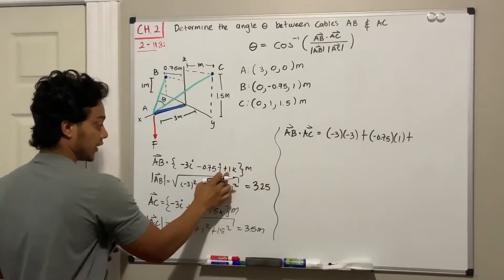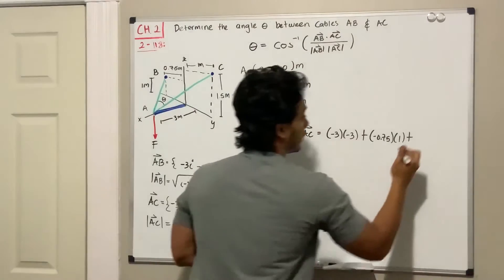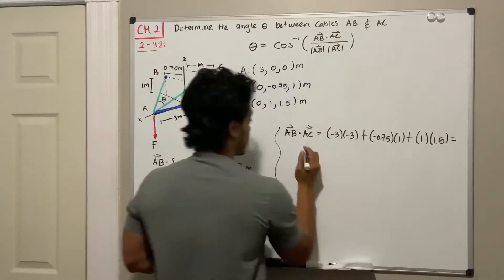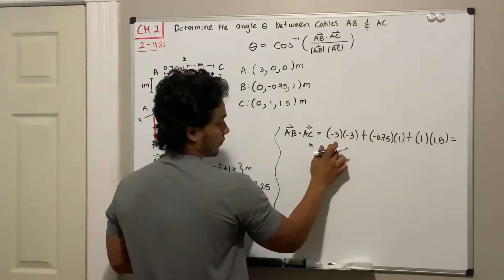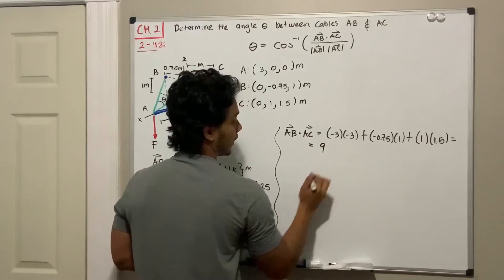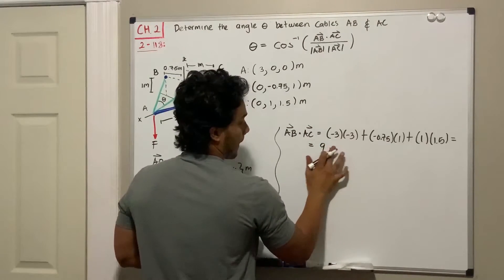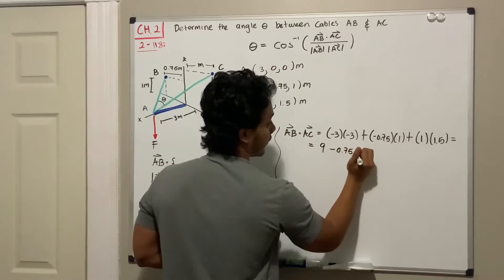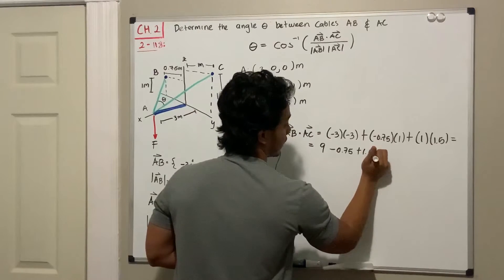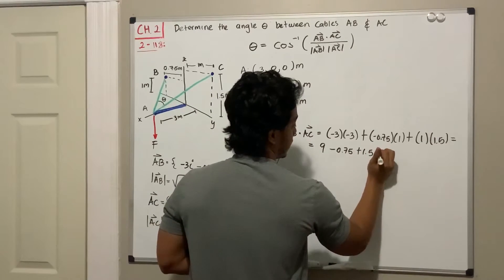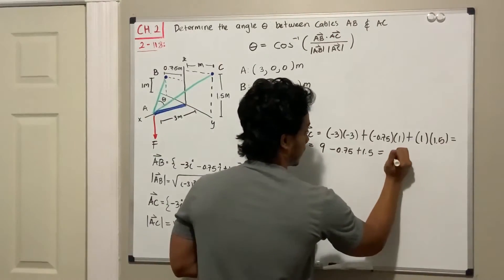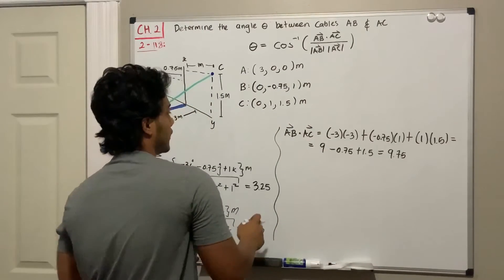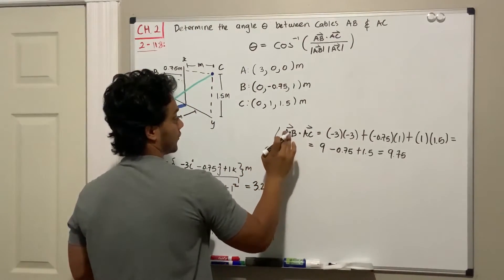negative 3 multiplied by negative 3 gives positive 9, minus 0.75, plus 1.5. If I'm not wrong, this gives a total of 9.75. So we have everything for the formula: we got the dot product